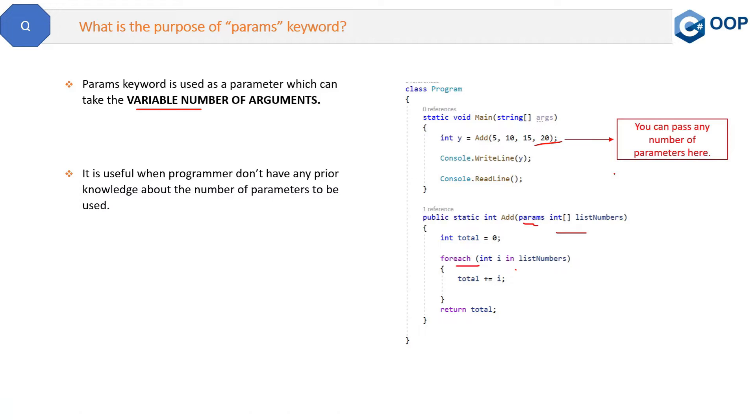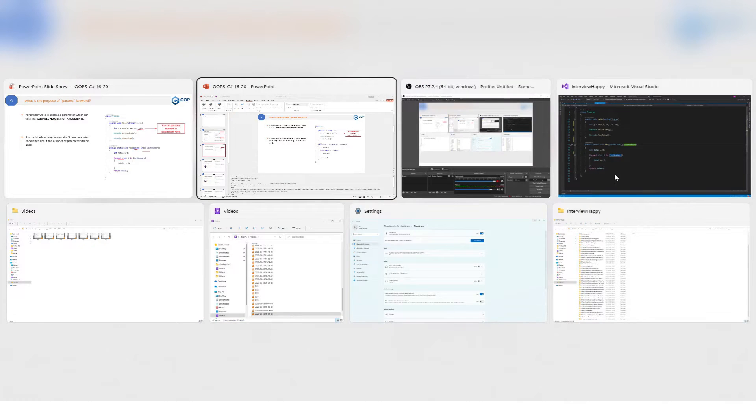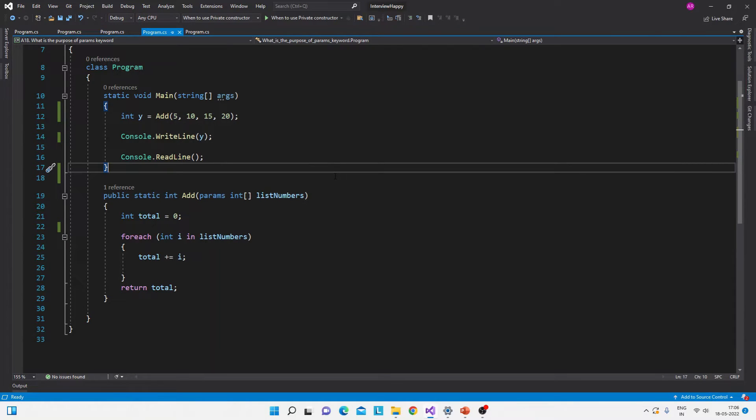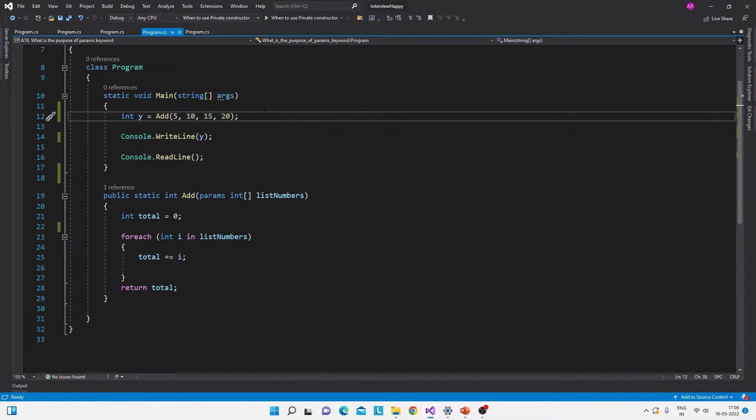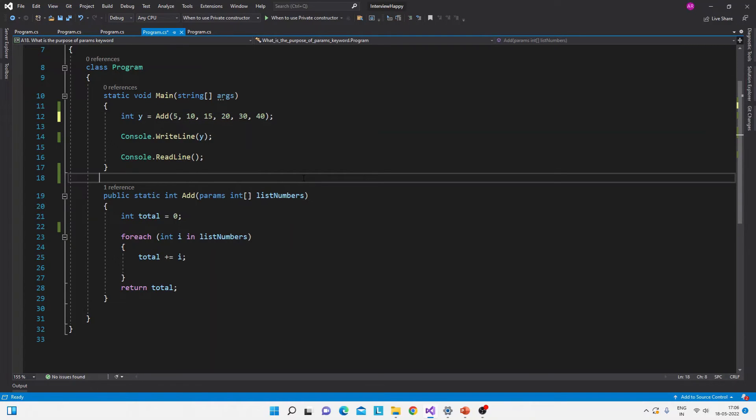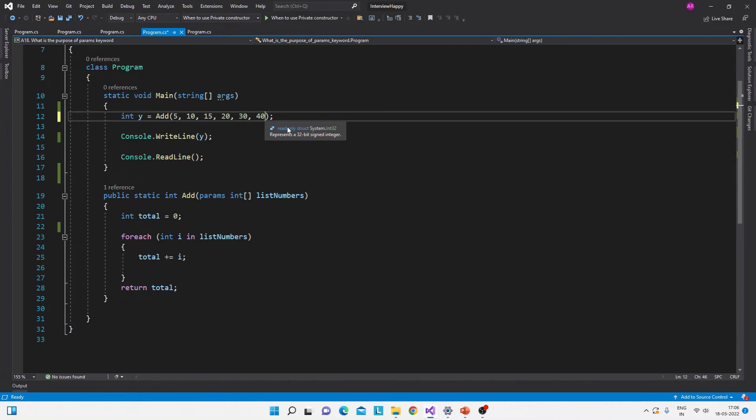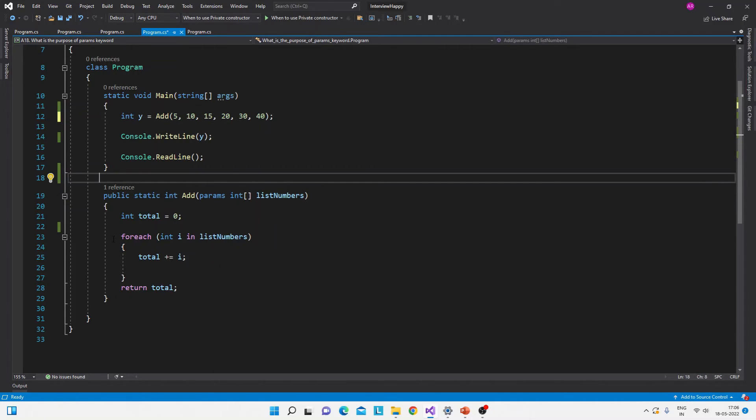So let me show you the same thing in the code also. See, here is a simple console application with a main method and this static add method. Now inside this add method we have right now four parameters, but you might want to increase the number of parameters. And you can increase it to six parameters. Still it will not give you any error. See, it will accept six parameters also. And as per the logic, it will just add this six parameters and will return the total.